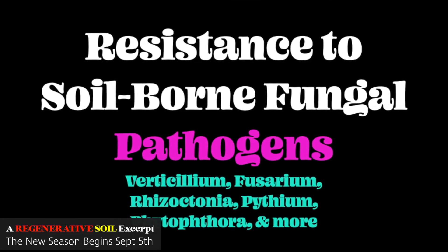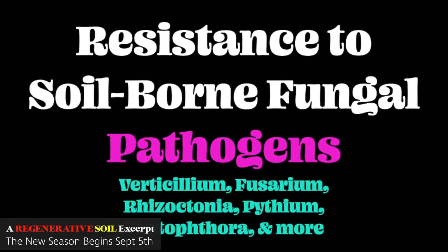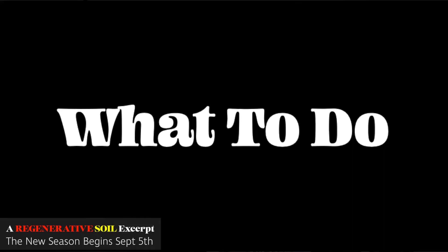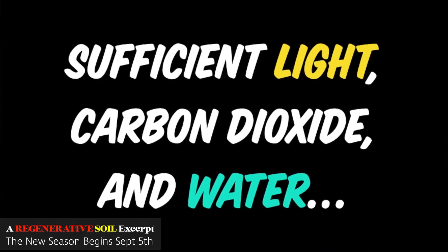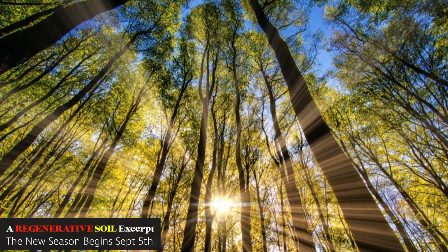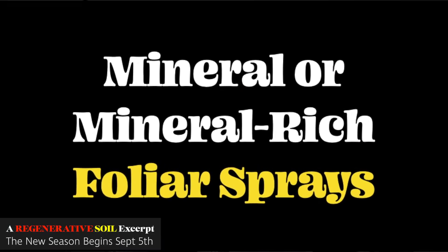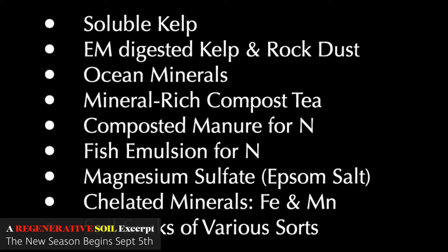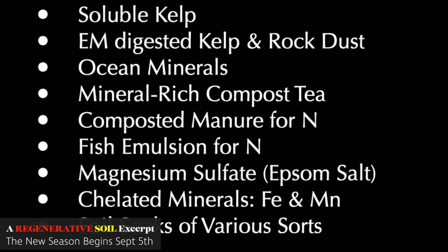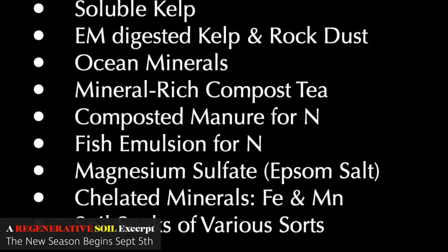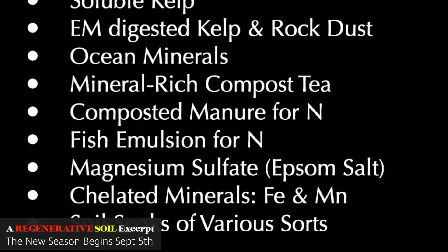The benefit of completing photosynthesis is resistance to soil-borne fungal pathogens: Verticillium, Fusarium, Rhizoctonia, Pythium, Phytophthora, and more. To address this, plants need sufficient light, enough carbon dioxide, and enough water — space things properly, ensure adequate light. Mineral-rich foliar sprays are key: chelated minerals, forms of iron and manganese, soluble kelp, EM-digested kelp, rock dust, ocean minerals, and mineral-rich compost tea.